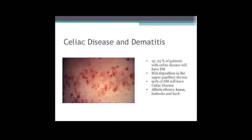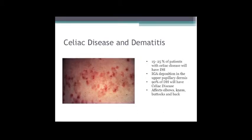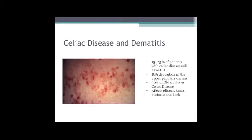Celiac disease is also associated with dermatologic issues - dermatitis herpetiformis. If you have a patient presenting with diarrhea and a rash, this picture would be characteristic of dermatitis herpetiformis. These patients if you biopsied the skin would have IgA deposition in the upper papillary dermis; it typically affects the elbows, knees, buttocks, and back.